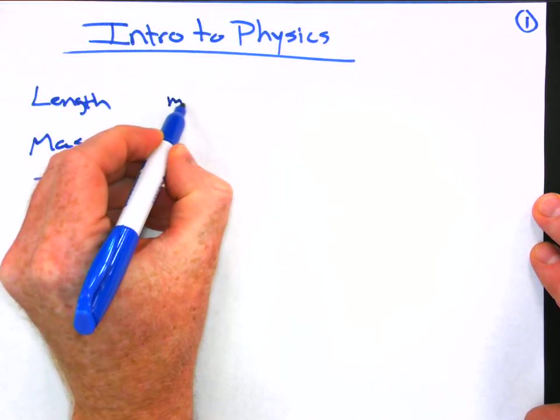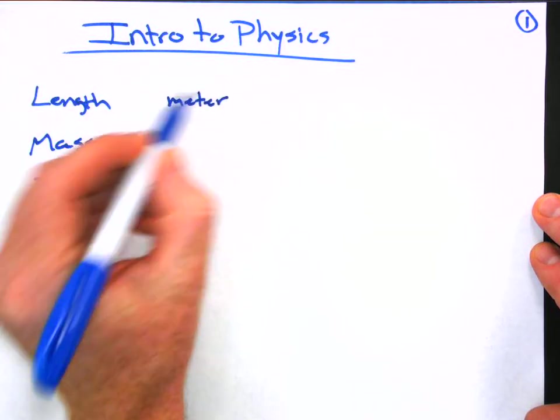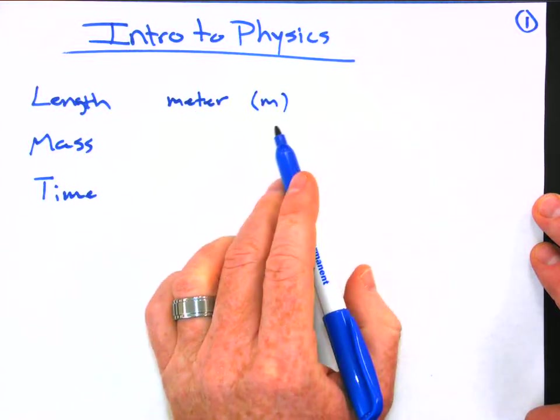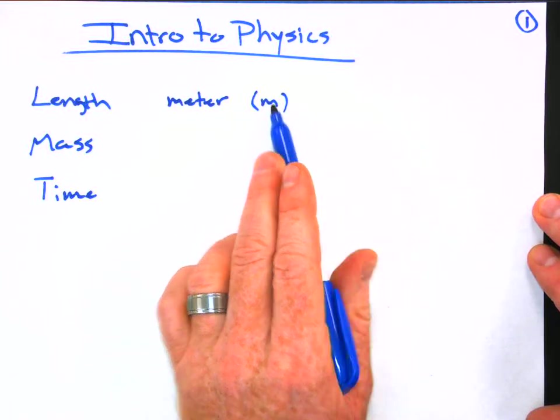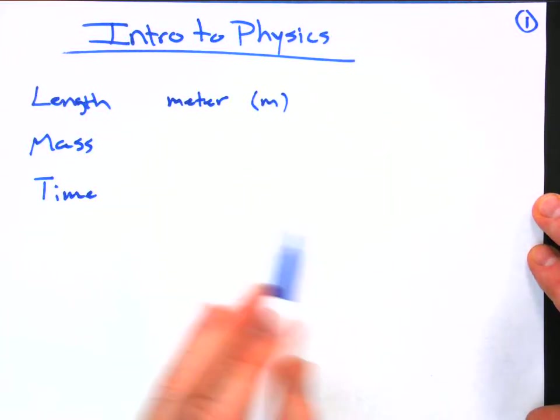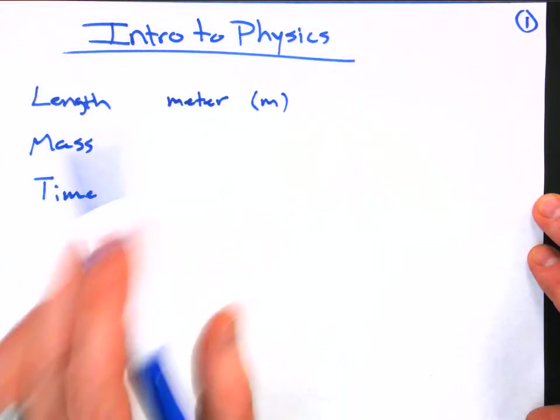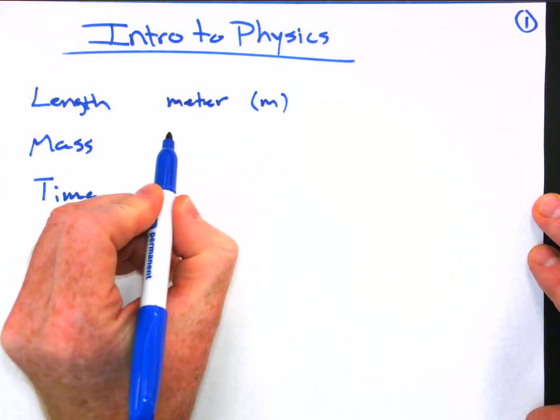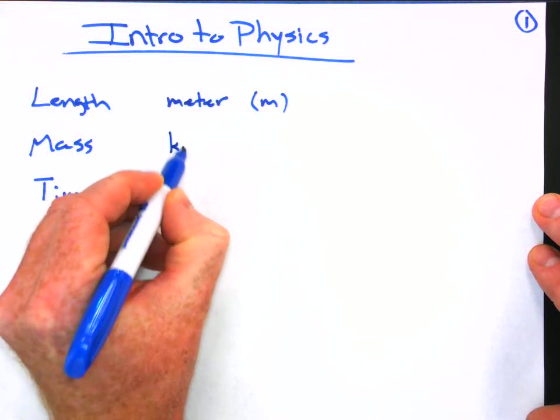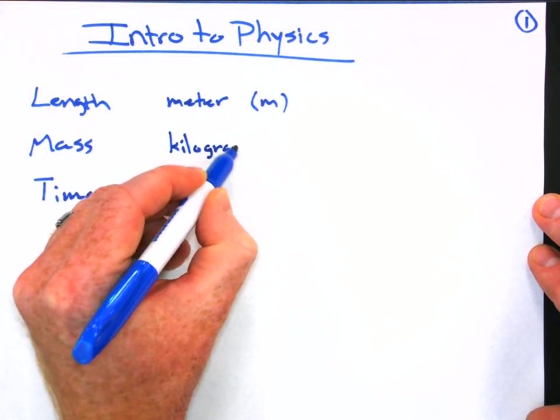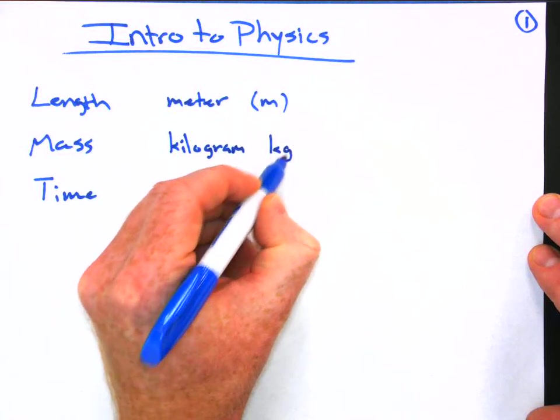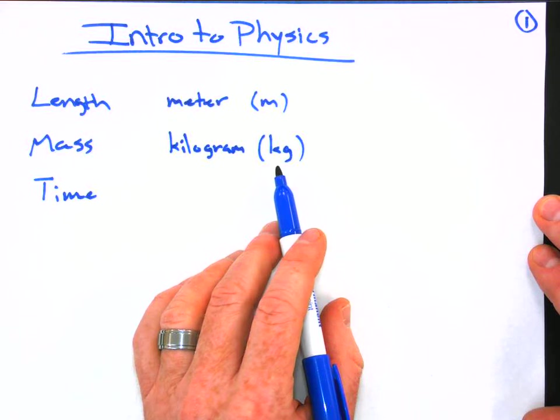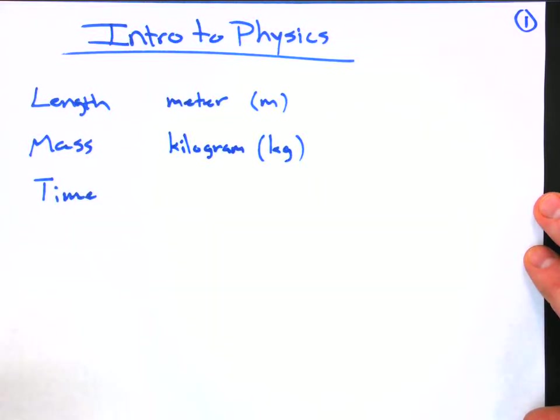So the unit of length, basic unit, will be the meter. We use the metric system. The symbol for the meter is just a lowercase m. You're going to see lowercase m's in other places and it might not be a meter. Mass, the unit of measure will be the kilogram, abbreviated KG. Right away you can see in the metric system, we got some prefixes. This is not new, but you want to be familiar with that.